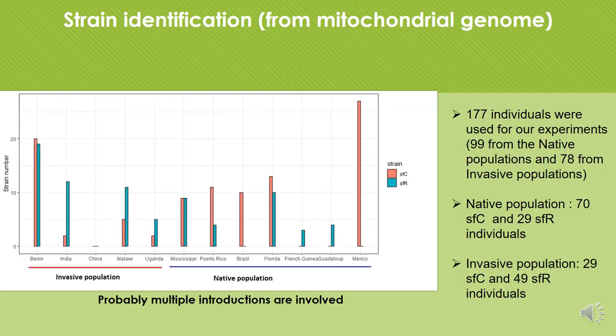First, strain identification was done using the mitochondrial genome, and for this we classified the files according to their strain. In total we had 177 individuals: 99 from the native population and 78 from the invasive population. The native population had 70 corn and 29 rice strain samples, and the invasive population had 29 corn and 49 rice strain samples.